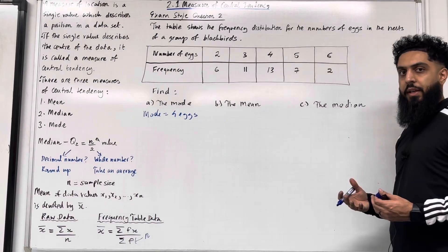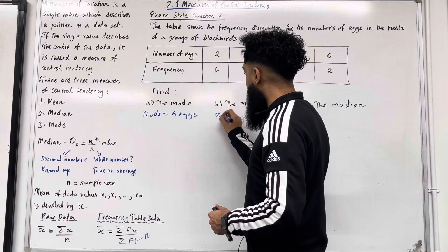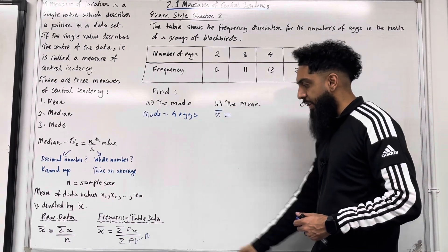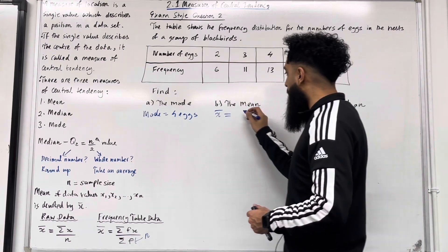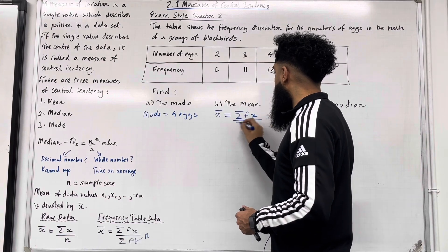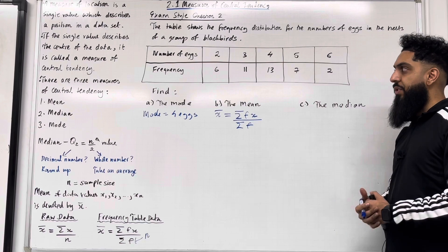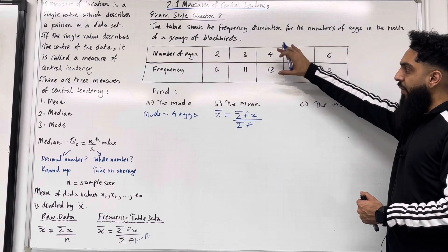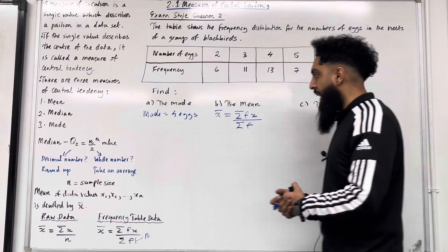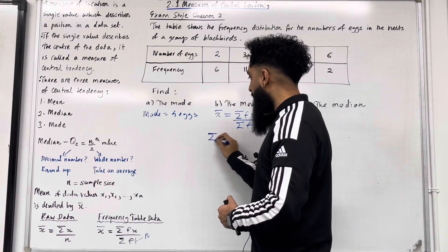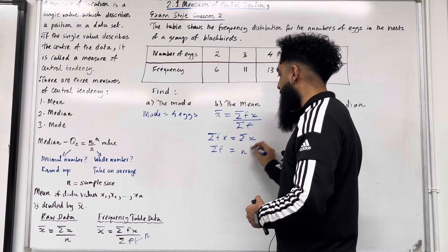For part B, we want to calculate the mean. The mean number of eggs is denoted X bar and is calculated using the frequency table formula: X bar equals sum of FX divided by sum of F. I'm going to show you how to use your Classwiz calculator to generate a frequency table and then calculate the mean. A quick reminder: in your Classwiz calculator, sum of FX is represented by sum of X, and sum of F is represented by N.